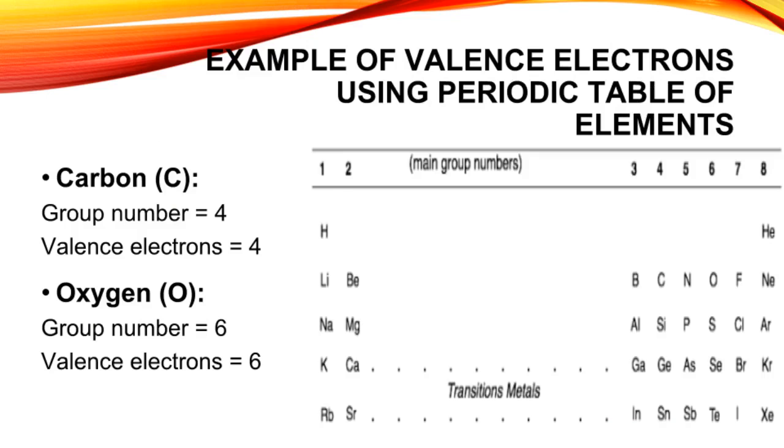Kindly refer to this sample. The main group number for an element can be found from its column or group on the periodic table. For example, carbon is in group 4 and has 4 valence electrons, while oxygen is in group 6 and has 6 valence electrons.